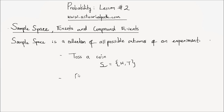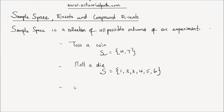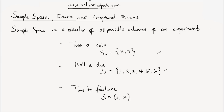If your experiment consists of rolling a six-sided fair die, then your sample space contains the numbers 1, 2, 3, 4, 5, and 6. If your experiment consists of monitoring the time to failure of a machine, then your sample space cannot be listed as in the first two examples, but it could be any value between zero and infinity. The first two sets are countable sets, while the last one is an uncountable set.